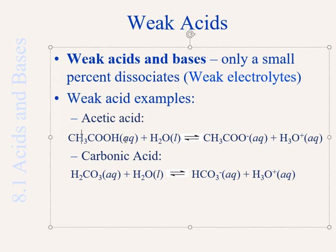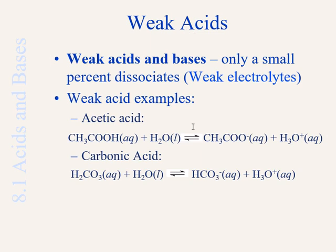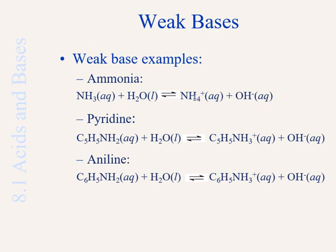Weak acids, on the other hand, are compounds which do not completely dissociate. One example is acetic acid, found in vinegar — we know it's a weak acid because you can see the reversible arrow. Another example is carbonic acid, found in your blood, which dissociates to give hydrogen bicarbonate and H3O+, but its dissociation is not complete. Examples of weak bases, which are also weak electrolytes, include ammonia, pyridine, and aniline. These three compounds act as Brønsted-Lowry bases and accept H+ from water.